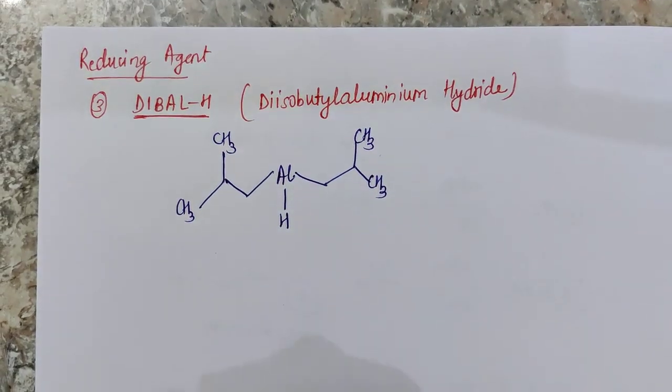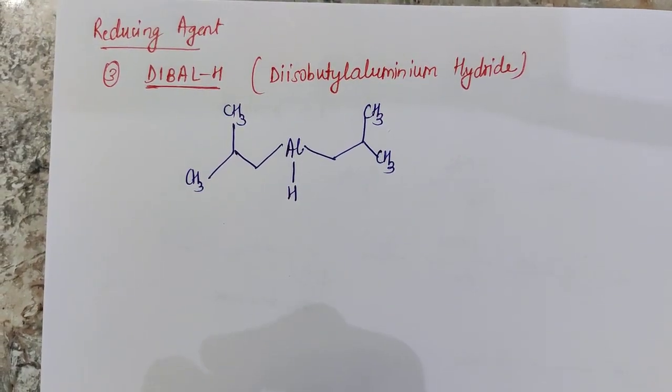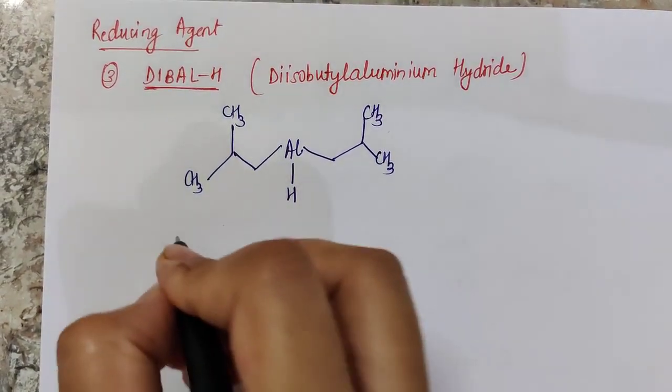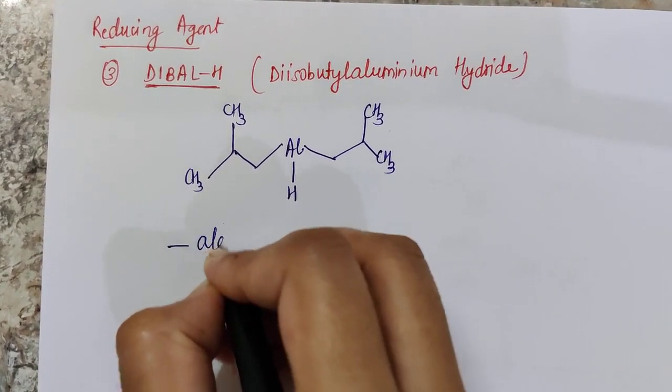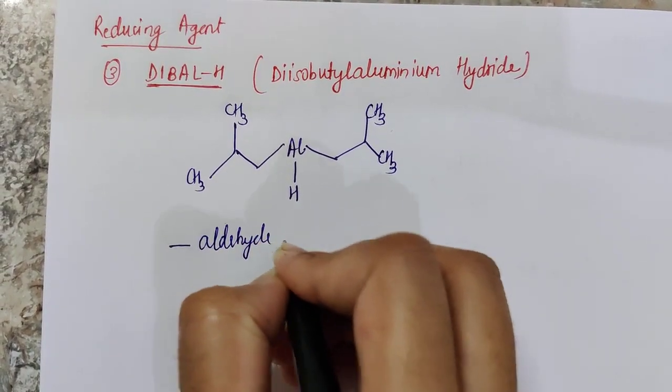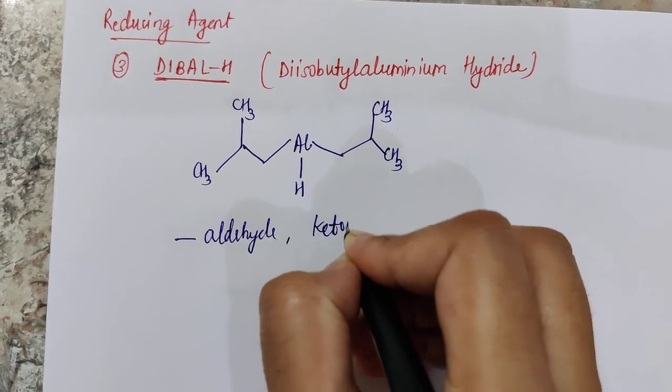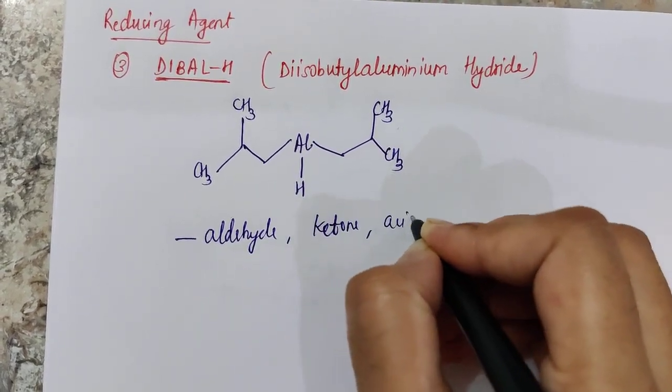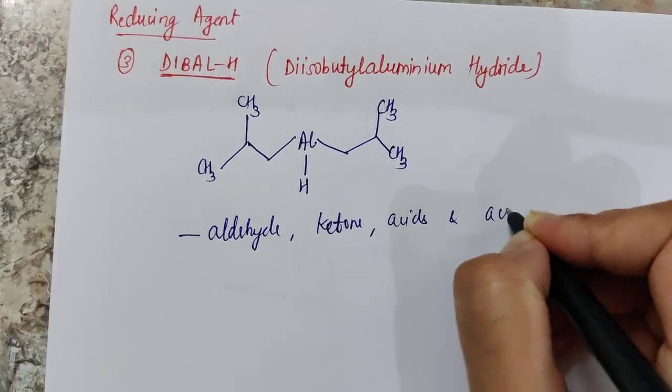So this is the structure of DIBAL and it reduces aldehyde, ketone, acids and acid chlorides.